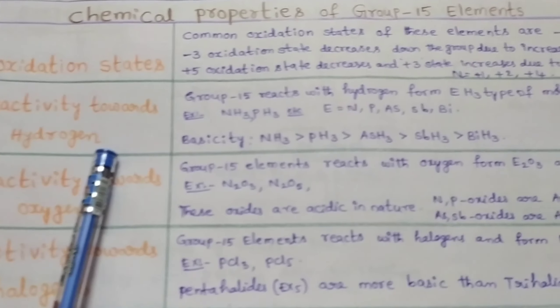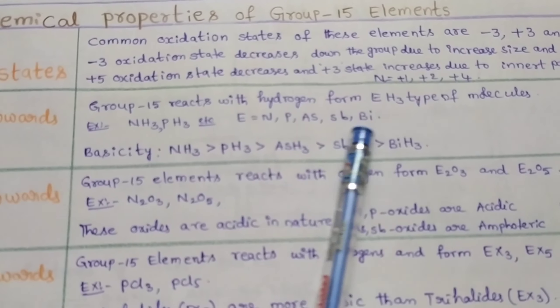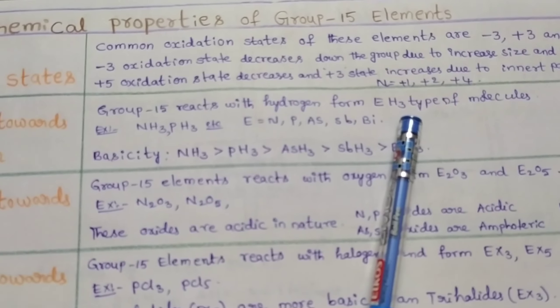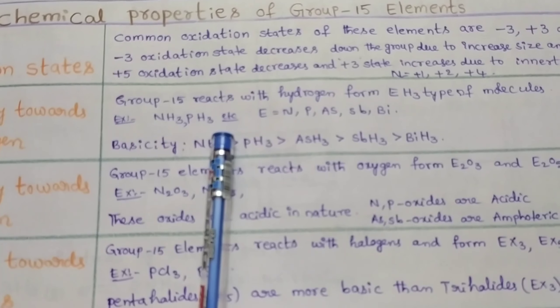Reactivity towards hydrogen. Group 15 elements when reacted with hydrogen form EH₃ type of molecules. For example, NH₃, PH₃, etc.